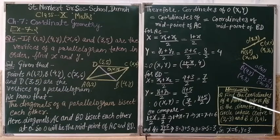Now write some homework. Find the coordinates of point A where AB is the diameter of a circle whose center is (2, -3) and B is (1, 4). Thank you.